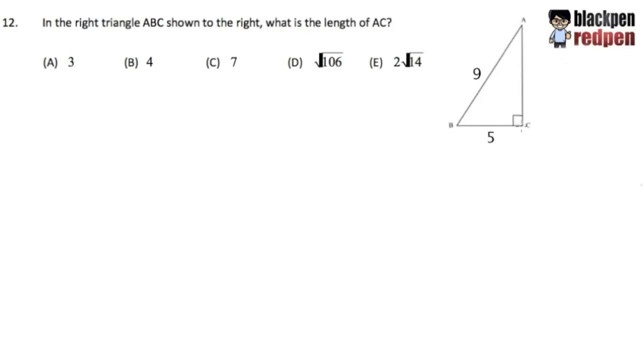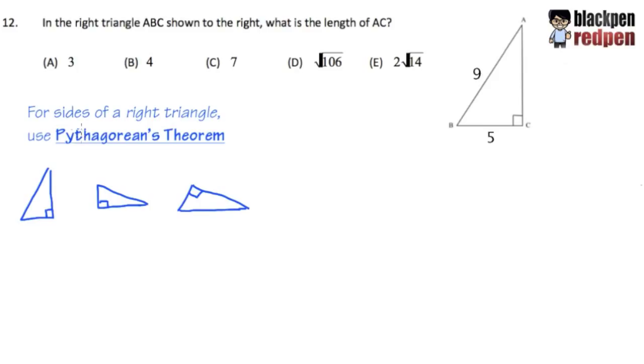Here we are talking about the sides of a right triangle, therefore we have to use the Pythagorean theorem, and let's do a quick review first. As you can see right here, I demonstrate three different ways to draw a right triangle. As long as you see in the picture that the triangle has a little square, which indicates it's a 90 degree angle, it's going to be a right triangle.